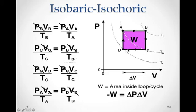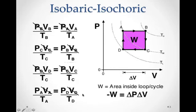Going from point C to point D, we're back to another isobaric process — constant pressure — so the pressures cancel and we can solve for what we need. Finally, from point D back to point A, we're back to an isochoric process where volume stays constant, the volumes cancel, and we solve for our unknown using algebra. That's how we use the ideal gas law to solve for various volumes, temperatures, or pressures in this cycle.